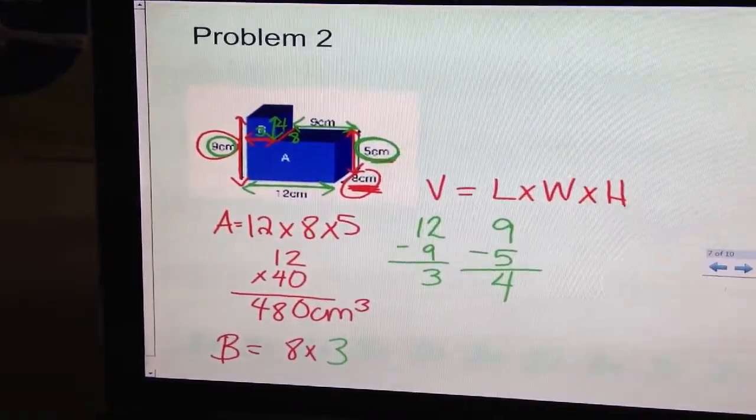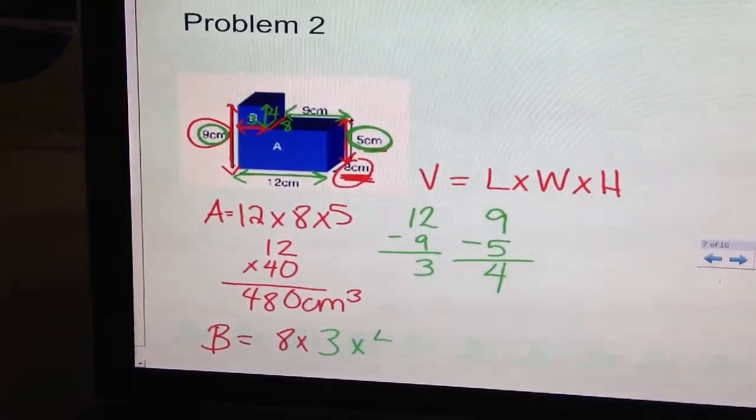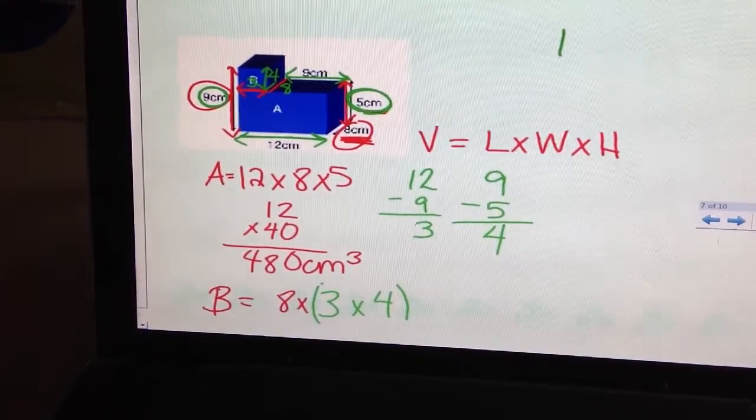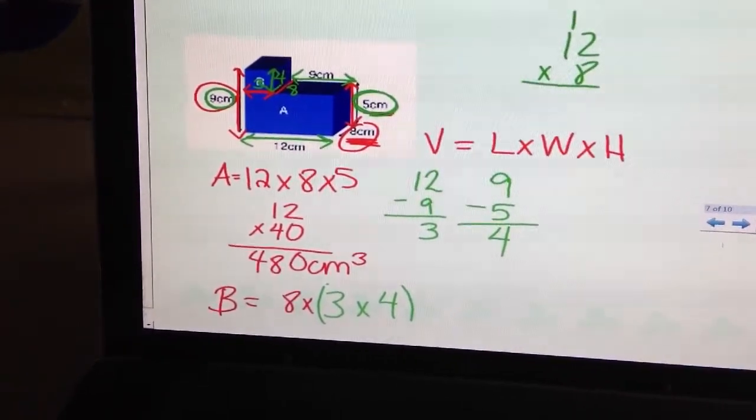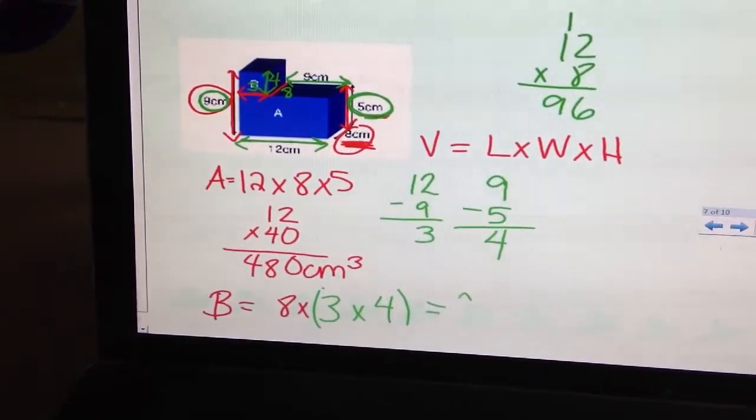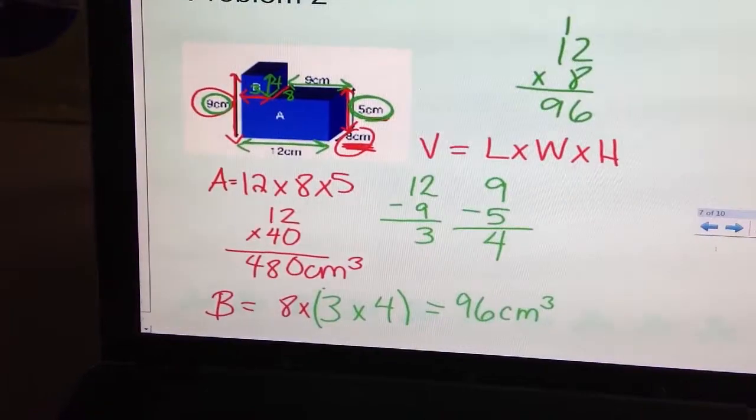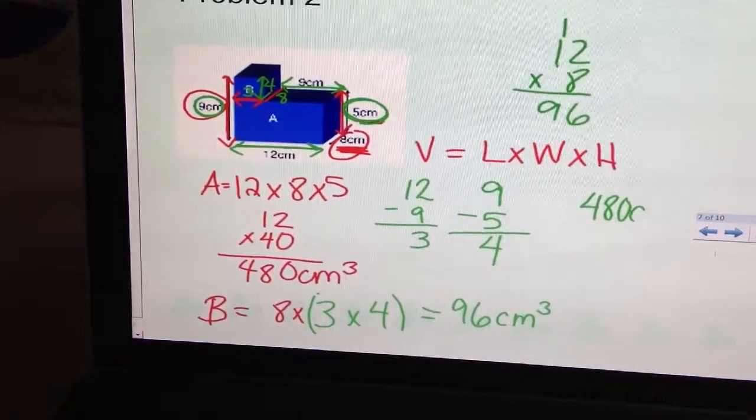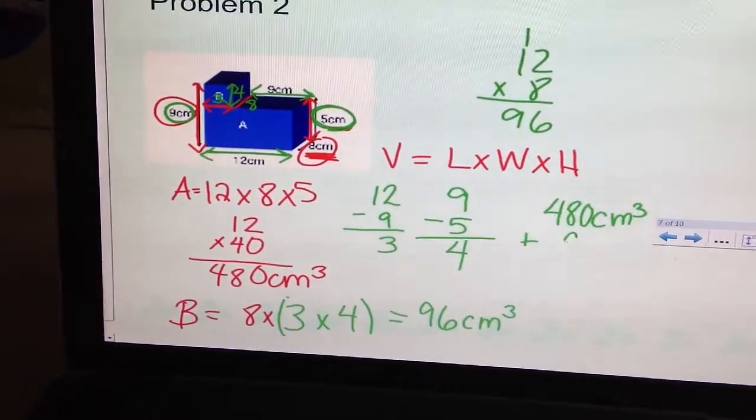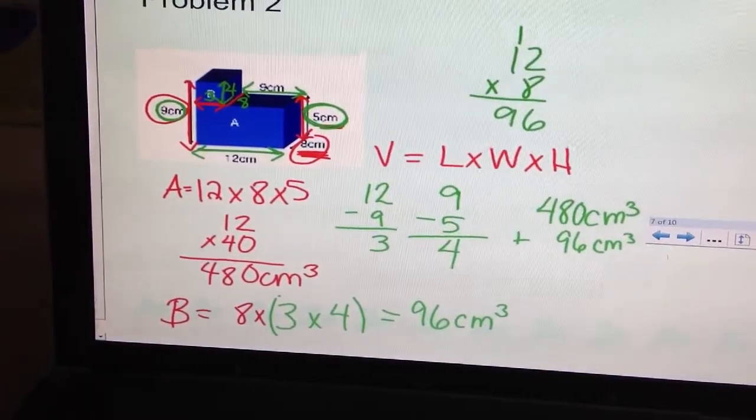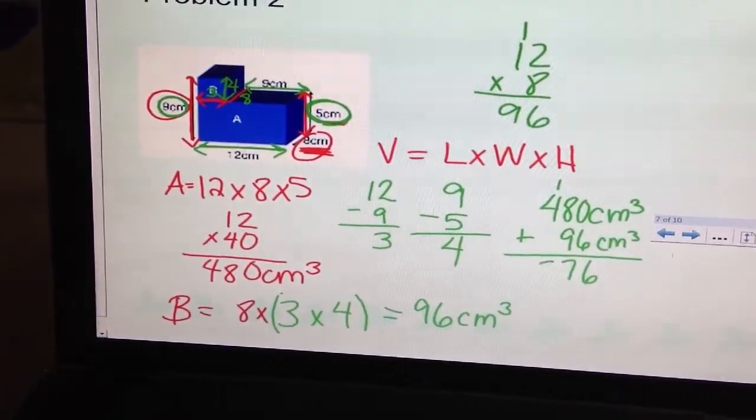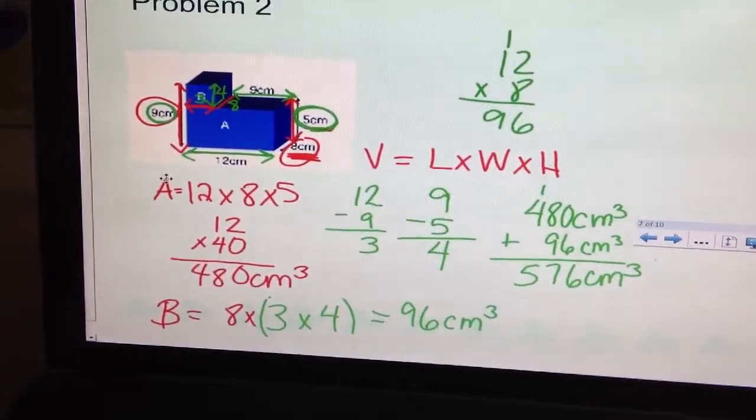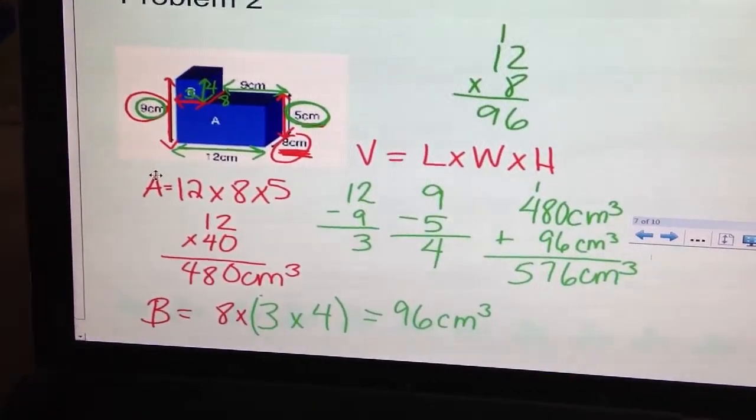which would be the height of block B. So I have 8 times 3 times 4. 3 times 4 is 12. I'm going to multiply that by 8. And I get 96 centimeters cubed. And if I want to figure out the volume of both, we're going to add them together. So 480 centimeters cubed plus 96 centimeters cubed, I get 576 centimeters cubed. I'm finding the volume of two separate cubes and then adding it together. We'll look at a couple on the homework.